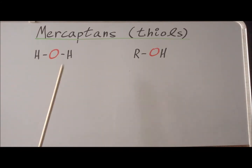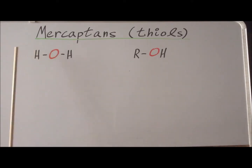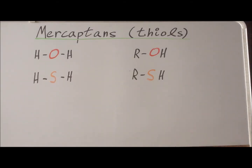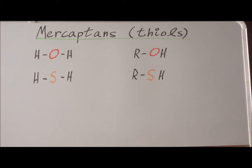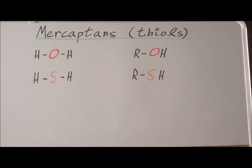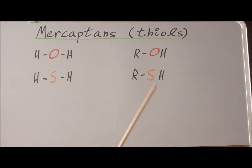We can think of an alcohol as a water molecule where one of the hydrogen atoms has been substituted with an alkyl group. Thiols and mercaptans are a class of organic compounds where we have an R group attached to the sulfhydryl group SH. Since sulfur and oxygen are in the same family, we can think of thiols as being related to the alcohols merely by substituting one member of the oxygen family for another — just replacing oxygen with sulfur.